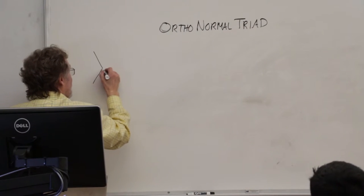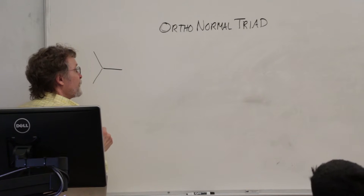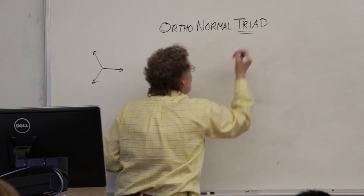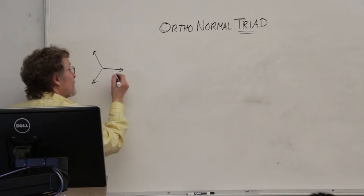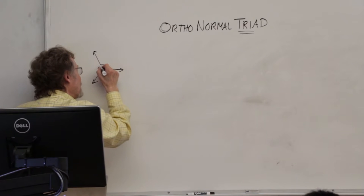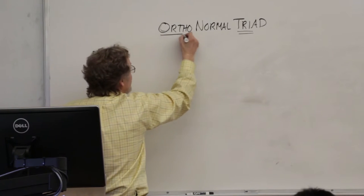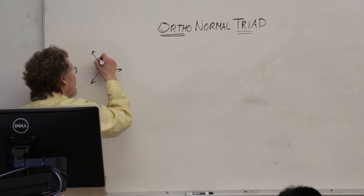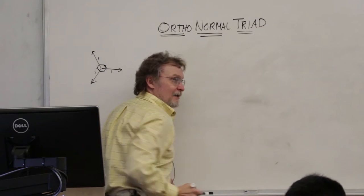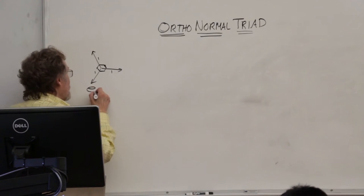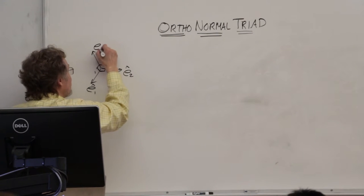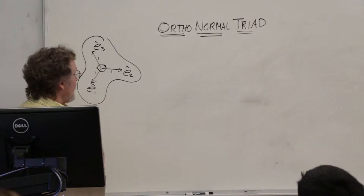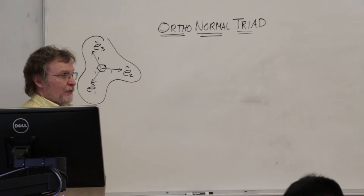Let's draw a little picture. An ortho-normal triad consists of three vectors that are mutually perpendicular to one another — that's the ortho part, orthogonal. And I'm going to indicate that they're all unit vectors — that's the normal part, normalized to one. An ortho-normal triad is any set of three mutually perpendicular unit vectors.